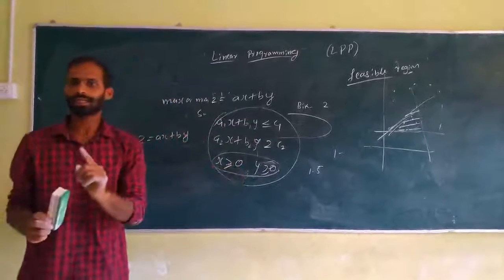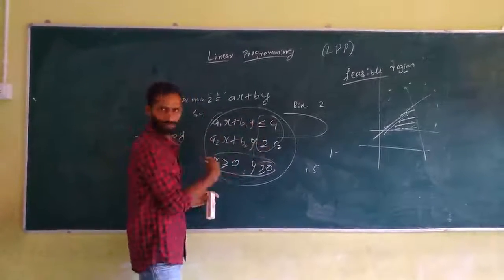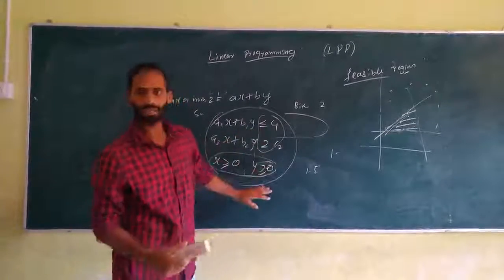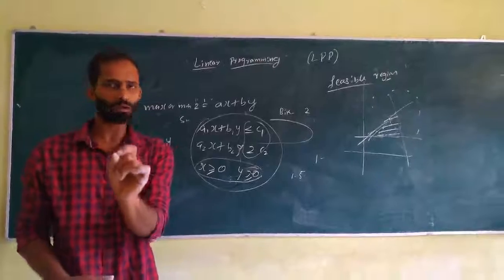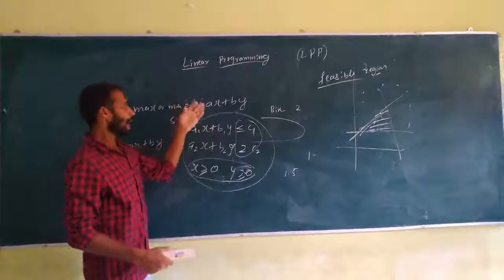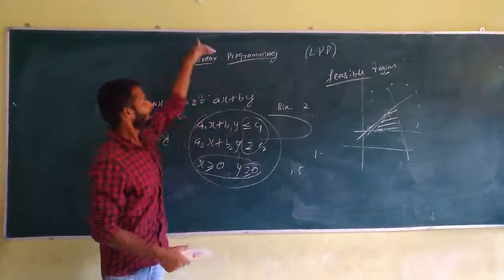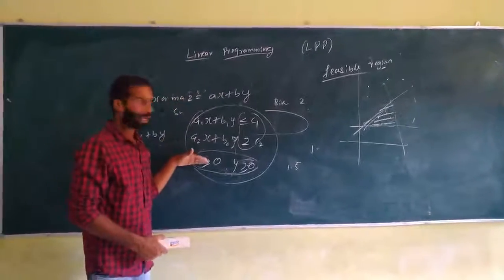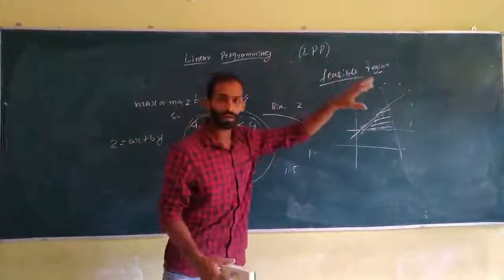Next are constraints. Constraints are linear inequalities — or they may be equalities — that are the conditions in a linear programming problem. The linear inequality in this problem is the constraint. So in LPP we have the objective function and the constraints.